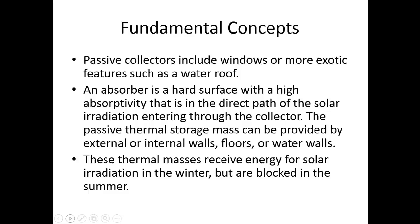Passive collectors include windows or more exotic features such as a water roof. An absorber is a hard surface with a high absorptivity that is in the direct path of solar irradiation entering through a collector. The passive solar thermal storage mass can be provided by external walls, floors, or waterfalls — almost like having something of high thermal mass in front of a window that can collect heat during the day and dissipate that heat at night. These thermal masses usually receive energy from solar irradiation in the winter but are blocked in the summer, helping keep a space cool in summer and heated in winter.